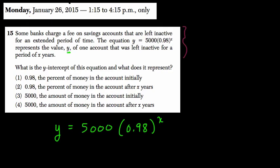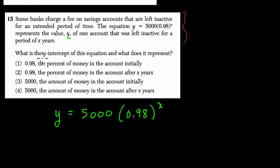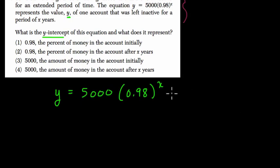They want to know what the y-intercept of this equation is. This is an exponential function. You can tell because the variable x is an exponent. In this problem, this is a decay function because the number in the parentheses is less than 1, so we're losing value over time.